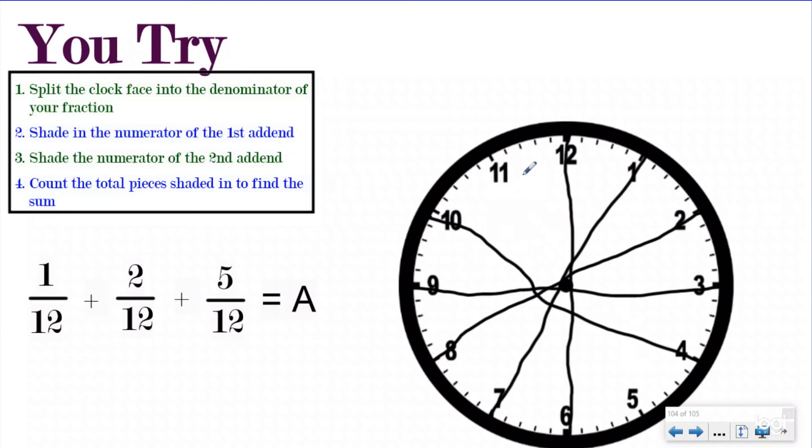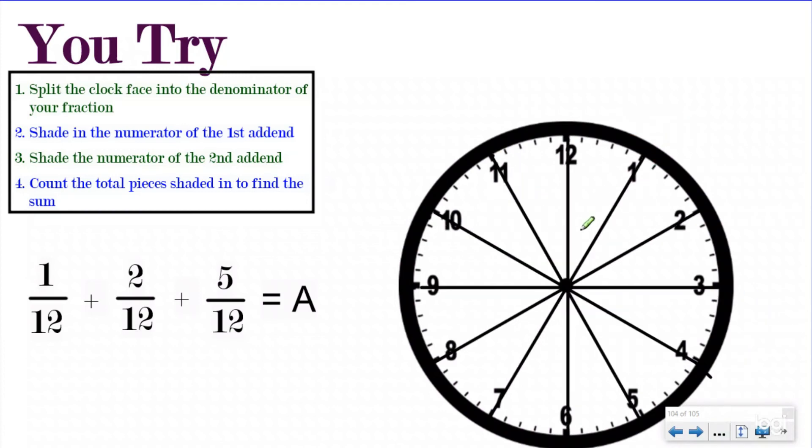So now I'm going to split this into 12 equal groups. I'm going to do my best here. A little bit harder than one might think. I should have done that first. So now I have 12 equal groups. So I want to shade in the numerator of my first addend, which is just one. So I'm starting with one-twelfth. And now I want to add two more twelfths here. Again, my denominator is not changing. I'm just adding my pieces, which are my numerator. My total is still staying the same, which is why at the end the total will be, or the denominator will still be 12.